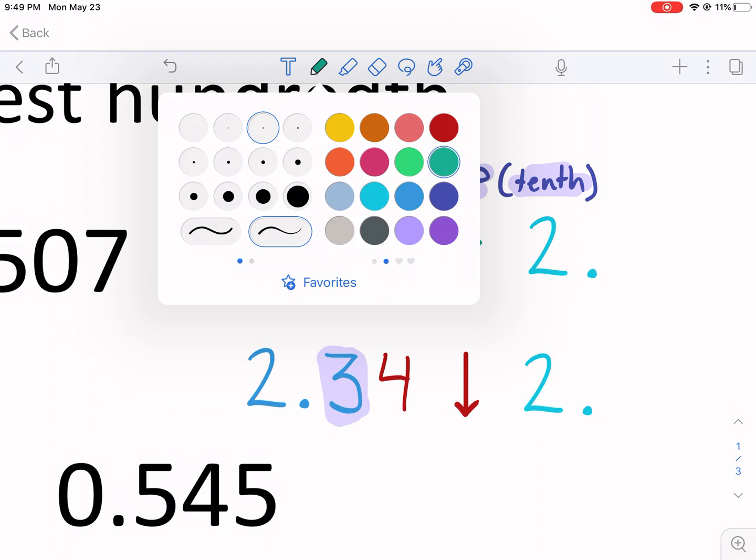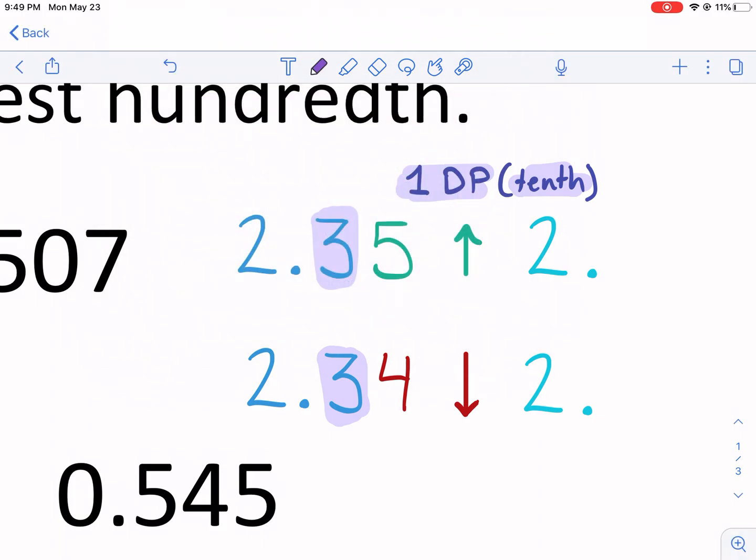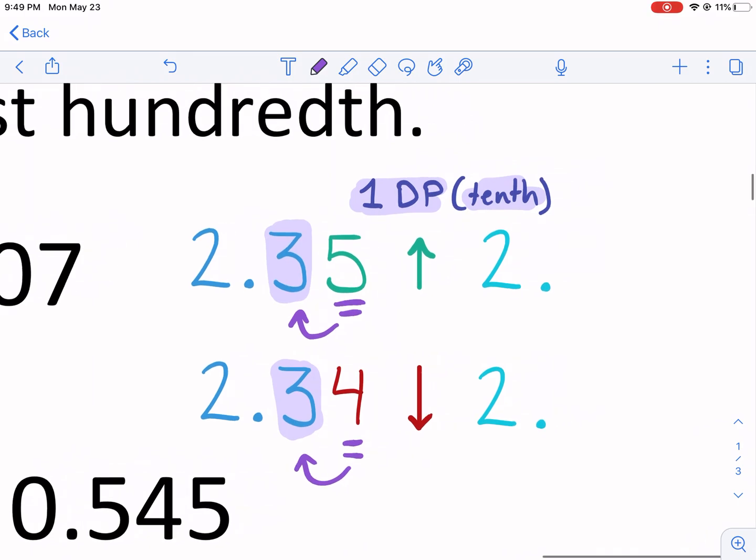The second step is you need to identify the place to the right of the 10th place. That's the number that tells it what to do. So this five and that four are the two numbers that are going to tell that 10th place, the first decimal place, what to do. So the number to the right tells it what to do because it's always right. You get it? That's a way to remember it. The number to the right tells it what to do.